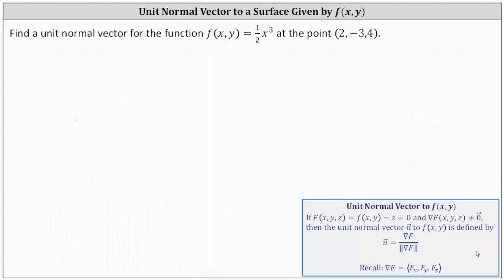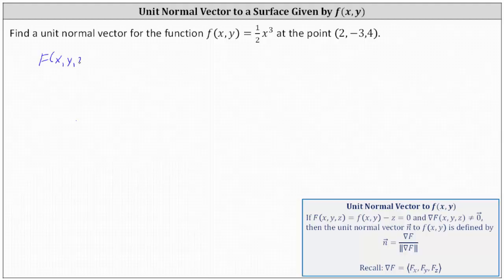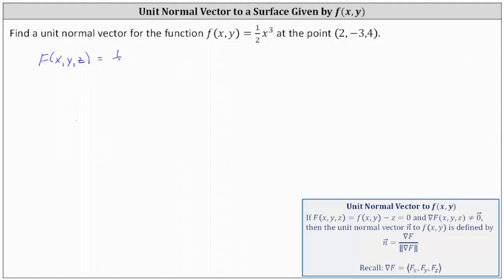Let's begin by determining F(x, y, z). F(x, y, z) = f(x, y) - z = 0, which in our case is ½x³ - z = 0.